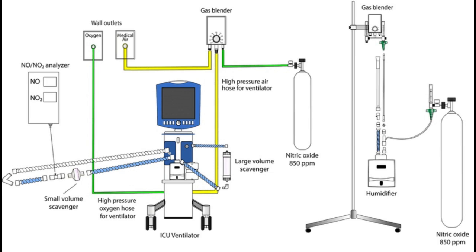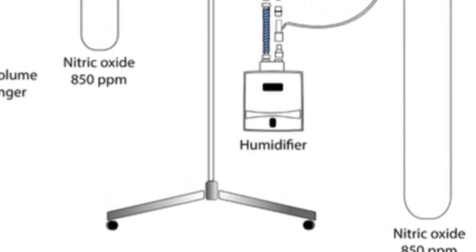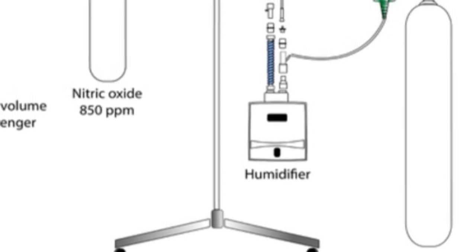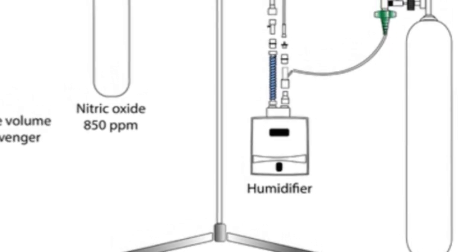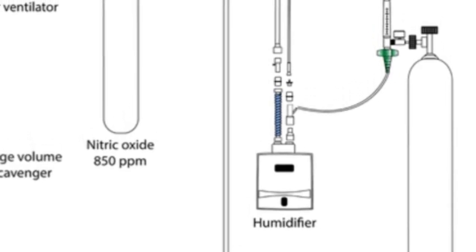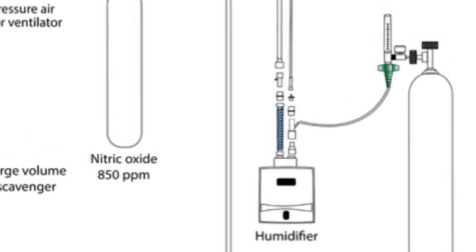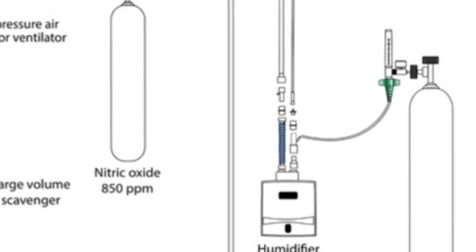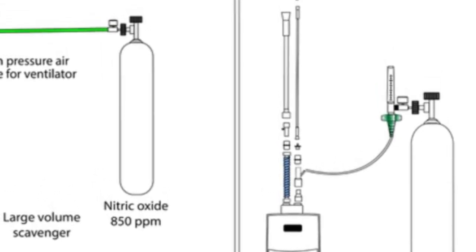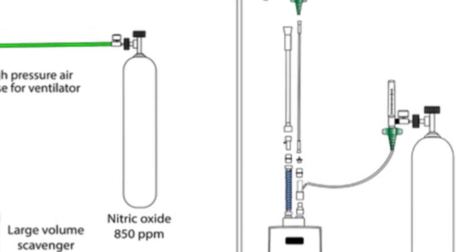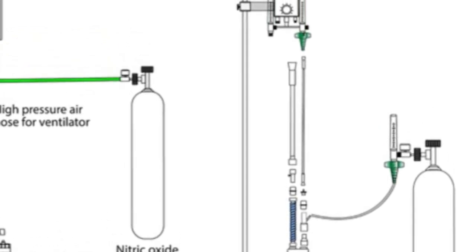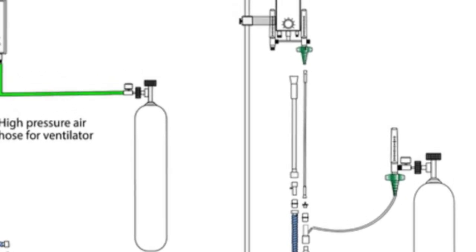Tanks of pure nitric oxide are used in the control group and tanks of 850 ppm nitric oxide are used in the intervention group. Test gas is blended with medical air and enters the air inlet of the ventilator. The high-pressure oxygen hose is directly connected to the ventilator. If there is any change of oxygen, the amount of nitric oxide delivered is regulated by the RT by adjusting the blender setting and the ventilator oxygen setting,